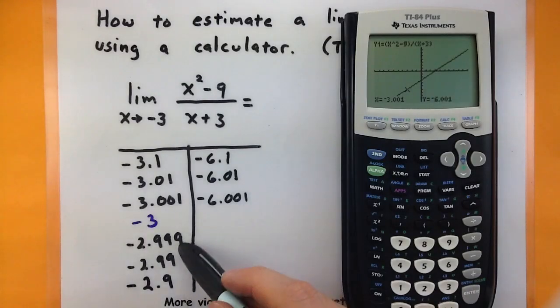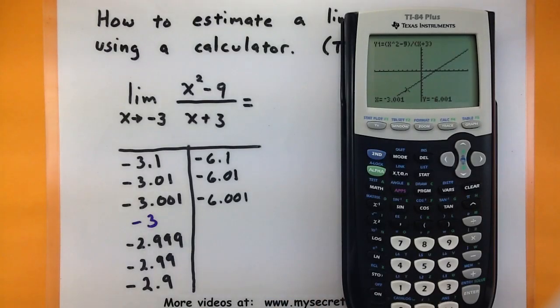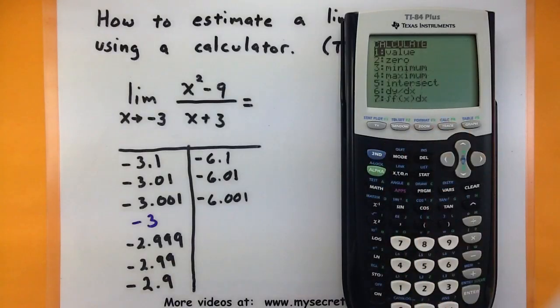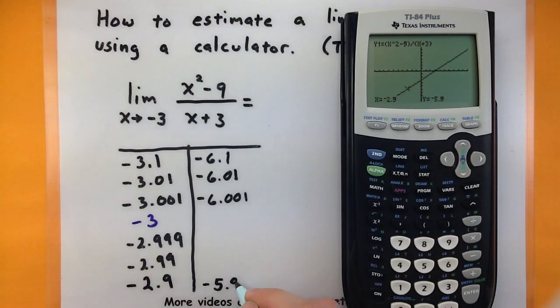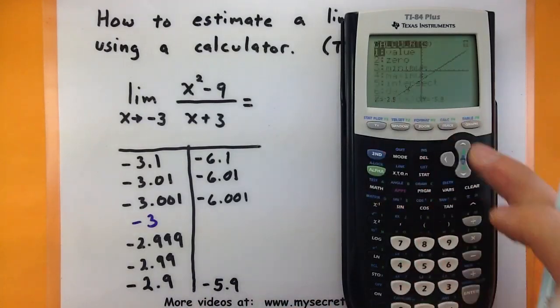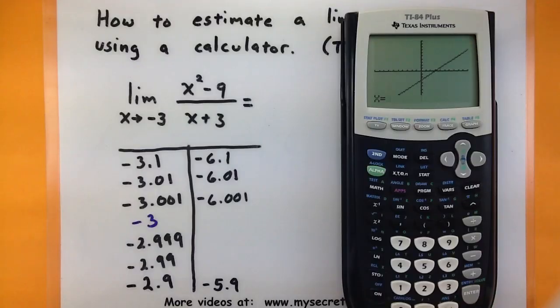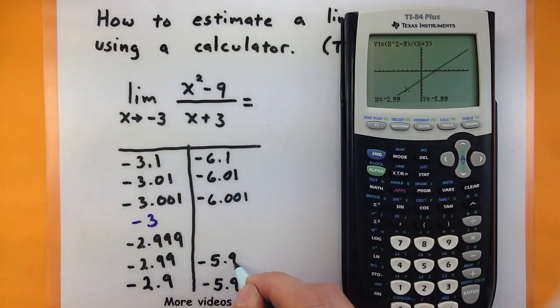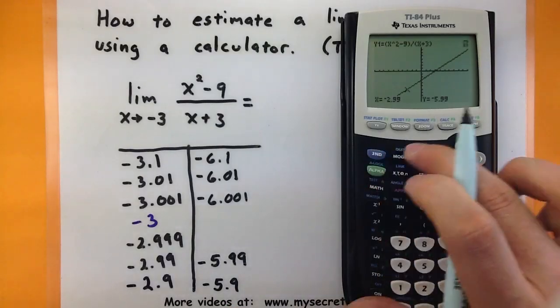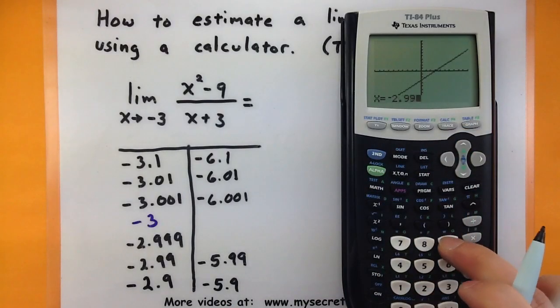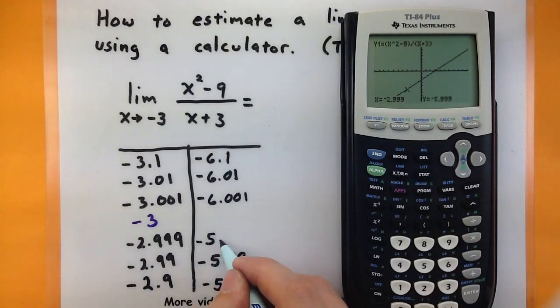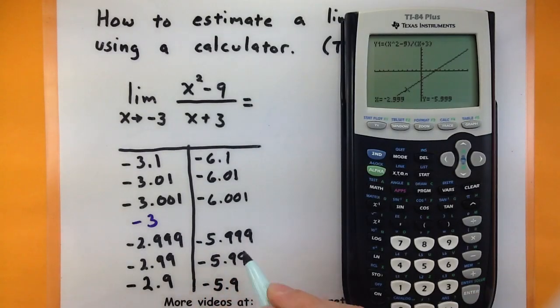Now of course, we also want to check things on the right side of negative 3, just to be on the safe side. Let's plug in those guys and see what we get. So negative 2.9, negative 5.9, second calc value, negative 2.99, negative 5.99, second calc value, negative 2.999. There we go.